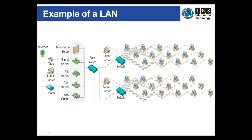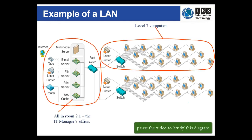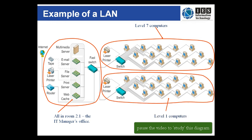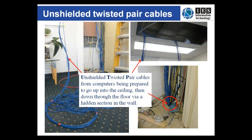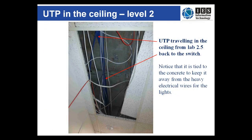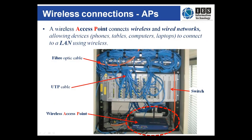Networks always look neat and ordered in their planning stages — the diagram shown is a rough plan of some of the IES network. Photos taken in the IES building show the ugly truth: it always looks neater in diagrammatic form than in real life, with cables going literally everywhere. There are two important devices on most business networks: wireless access points, or APs, and switches.